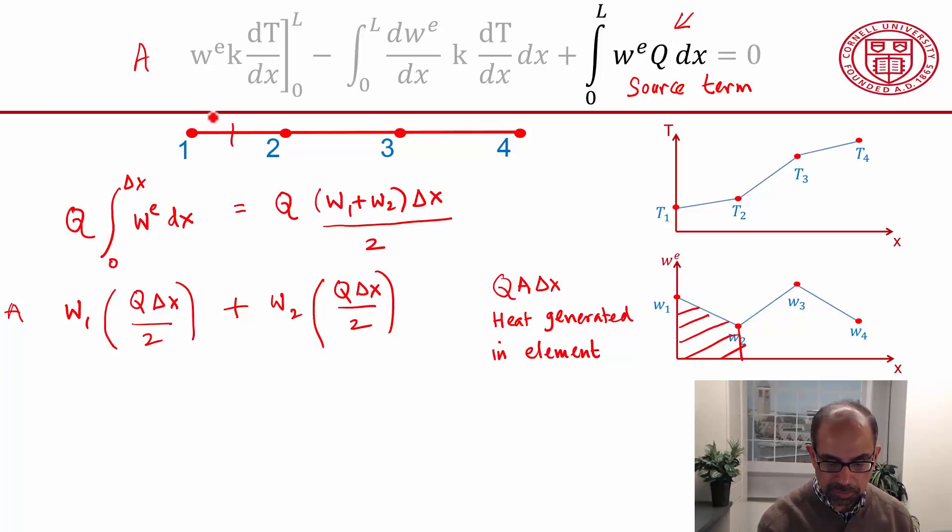So if I divide this into two, half of this heat generated gets assigned here, and half of it gets assigned here. And similarly for element two, half of this will get assigned here, and half of this will get assigned here.